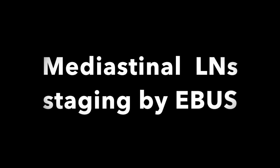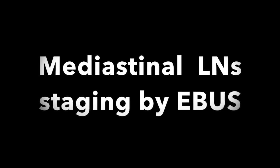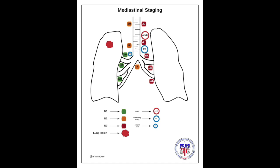We'll continue the mediastinum lymph node staging by EBUS. This is the same scenario for a patient with right upper lobe lung lesion, and the staging will continue from the left side going toward the right side.